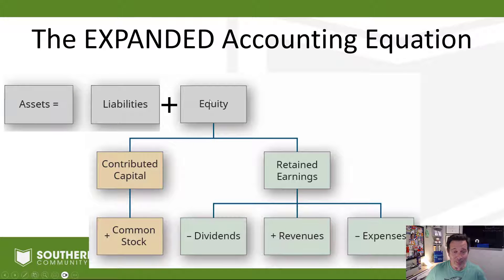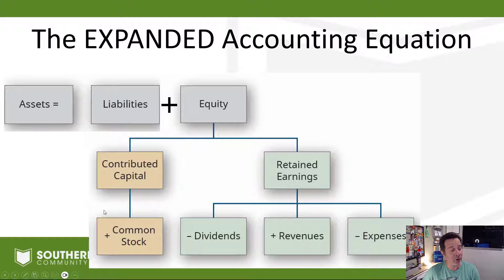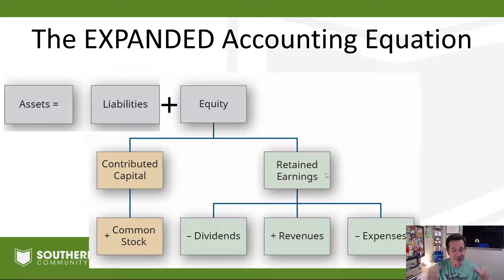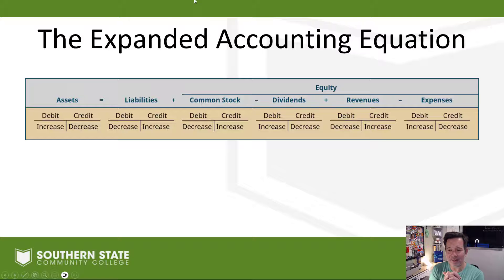So that's the expanded accounting equation. The important part — assets equals liabilities plus equity — is still there, still as important as ever. But now we understand that equity consists of amounts contributed by the ownership, common stock or capital for a sole proprietor or partnership, plus retained earnings: amounts earned by the company — retained profits — which consist of revenues minus expenses.